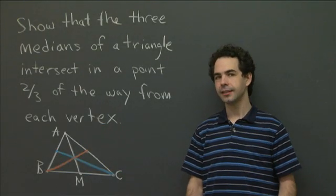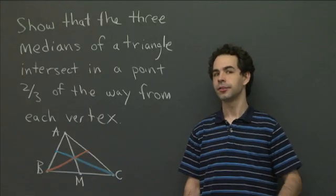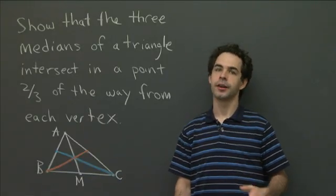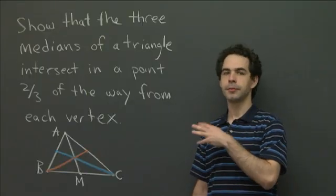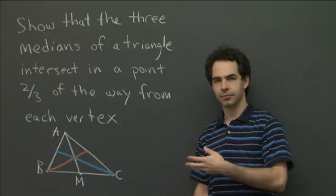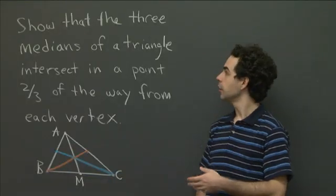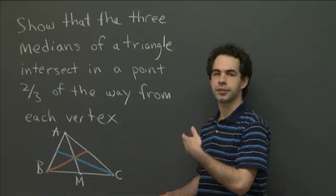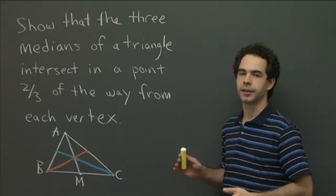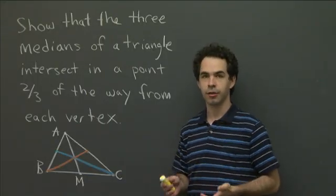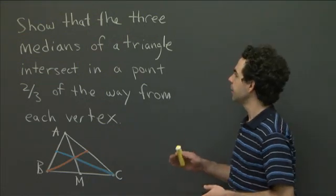Hi, welcome to recitation. In lecture you've started learning about vectors. Vectors are going to be really important throughout the whole of this course, and I wanted to give you one problem just to work with them in a slightly different context than what we're going to do in the future. So this is the context of Euclidean geometry. Some of you have probably seen this problem that we're going to solve, but you probably haven't seen it solved with vectors.